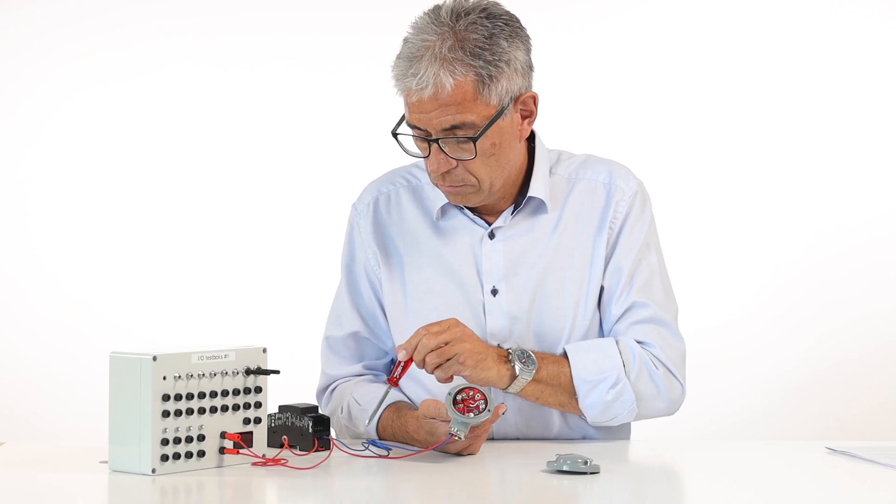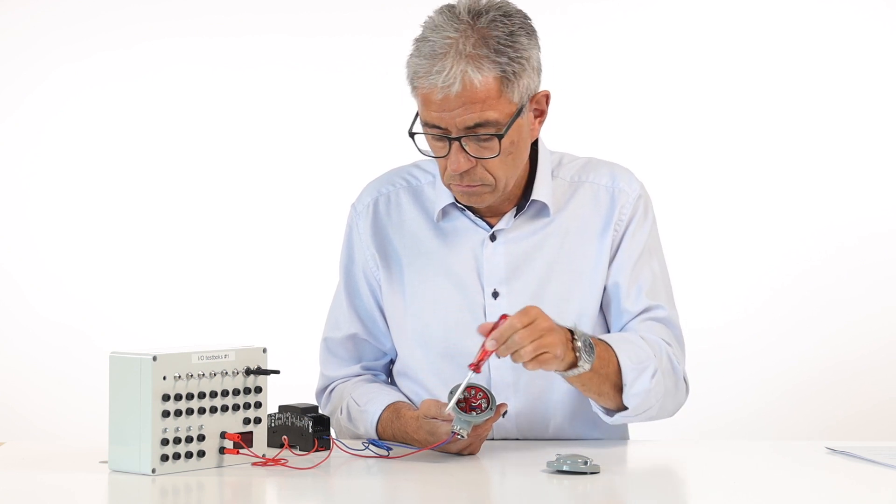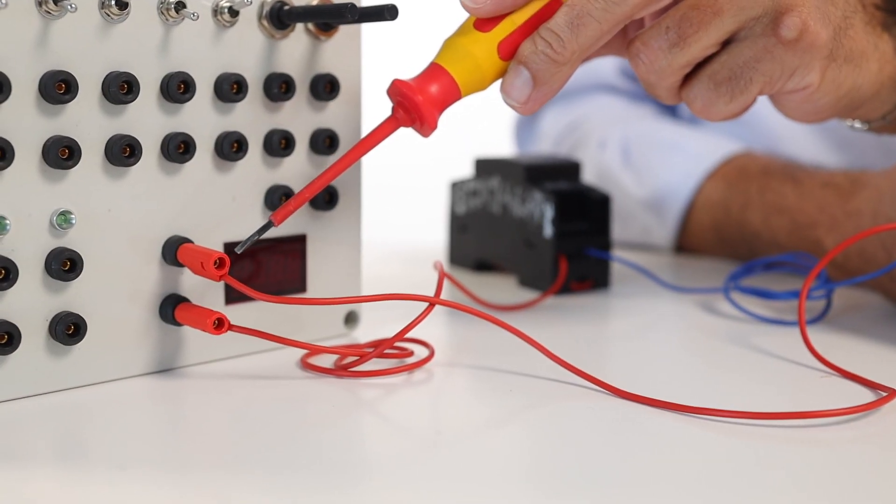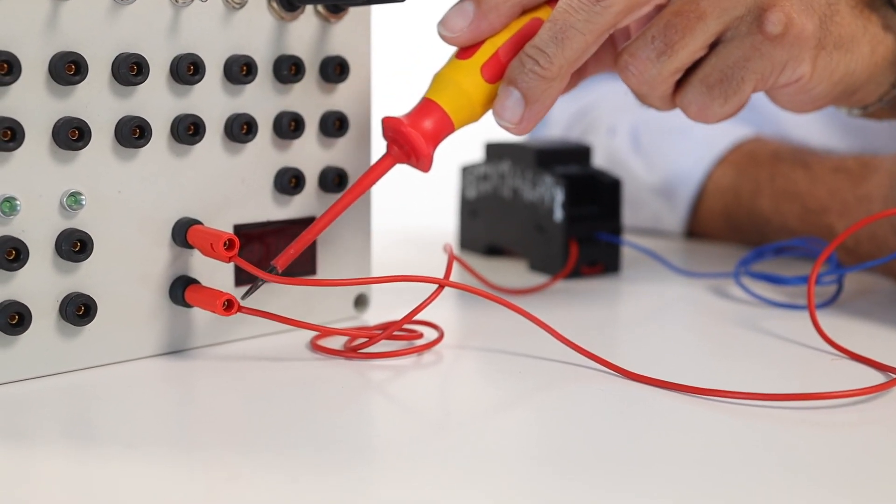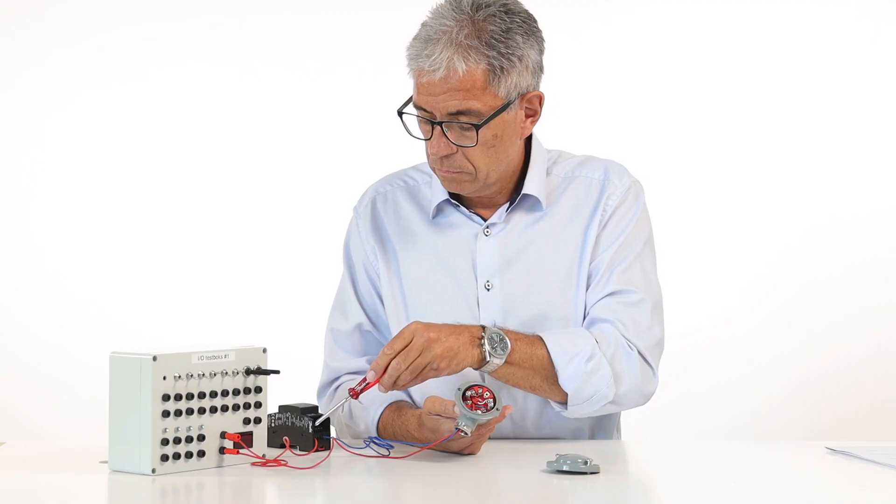The positive cord is connected from the transformer to the temperature transmitter. From the temperature transmitter, the negative cord is connected to the milliamp display in series. From the milliamp display, the cord is connected back to the negative power supply.